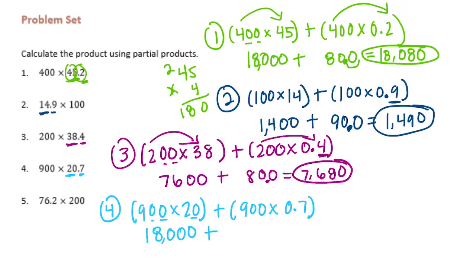Plus 900 times 0.7. 9 times 7 is 63 with 2 zeros, but we need to divide it by 10 to make it 630. So if we add 18,000 plus 630, we'll have 18,630.